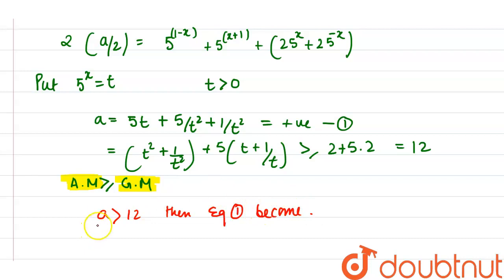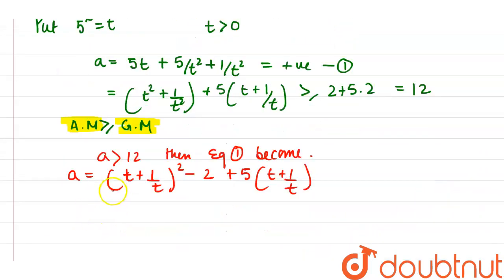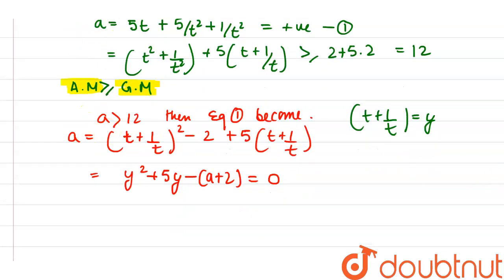Since a is greater than or equal to 12, we substitute back. We let y equal t plus 1/t, so a equals y² minus 2 plus 5y. Rearranging, we get the quadratic: y² plus 5y minus (a + 2) equals 0, where y equals t plus 1/t.